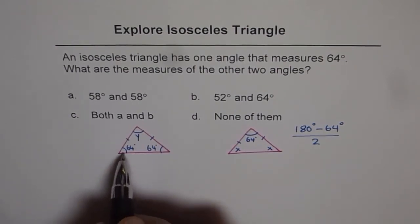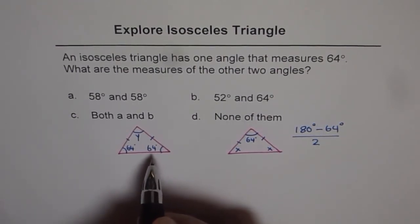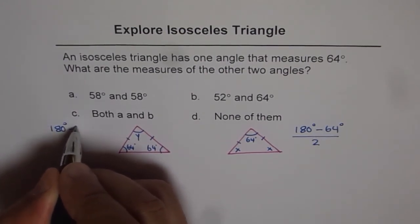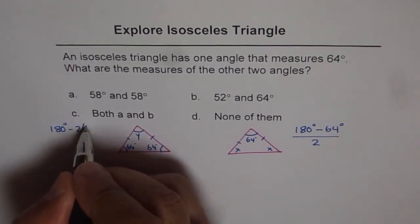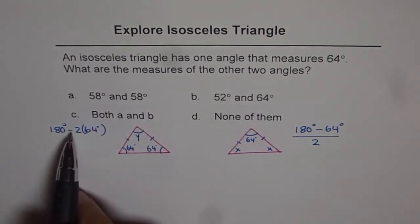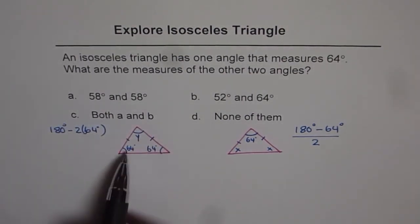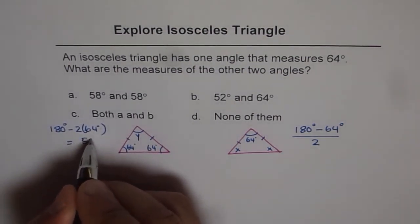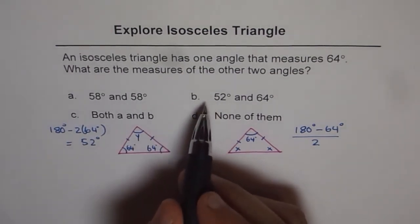Now if I look into this, then I can solve it like 180 degrees minus 2 times 64 degrees. So if I do 180 degrees minus 2 times 64 degrees, what do I get? I will get 52 degrees. That gives me solution B.